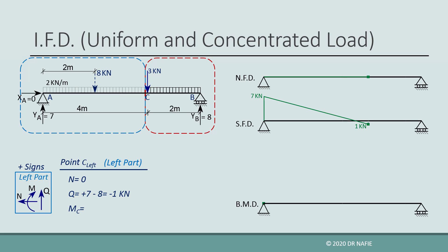The value of the moment will be calculated by taking the moment of all the forces in the left part about point C. The left part contains two forces: yA multiplied by an arm of 4 meters rotating in the positive direction, and the 8 kilonewton equivalent force multiplied by an arm of 2 meters rotating in the negative direction. The resulting moment about C will be positive 12 kilonewton meters.